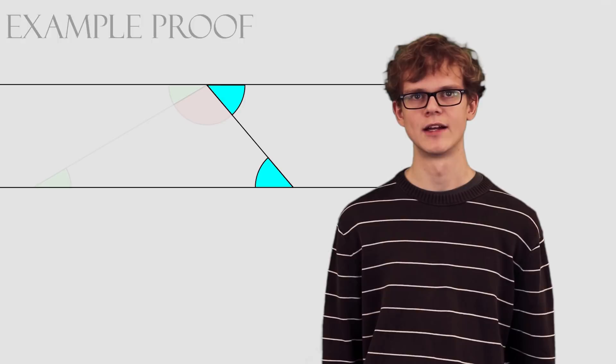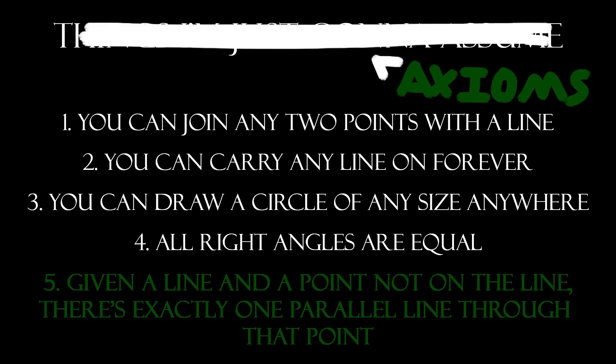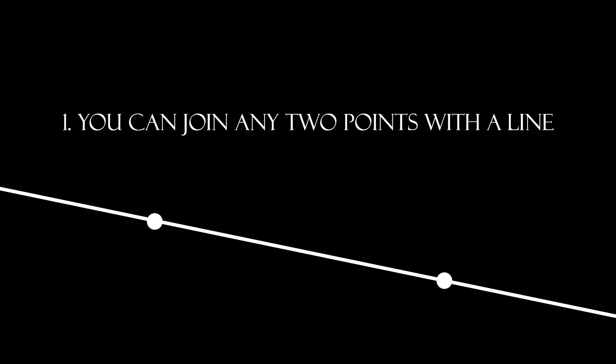But proofs can't start from nothing, so there are a couple of claims Euclid made right at the beginning which he had to leave unproved. We call these axioms. Most of these axioms are pretty obvious-sounding — things like, you can draw a line between any two points, and you can draw a circle of any size around any given point. So Euclid was happy to leave them unproved.